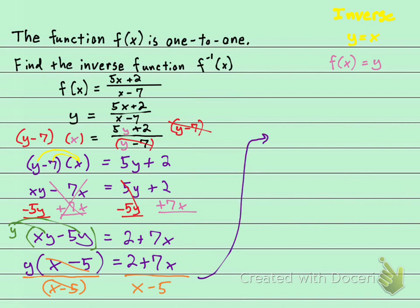I'll bring it up here. On the left-hand side of the equal sign, I have y. And on the right-hand side, I have 2 plus 7x over x minus 5.